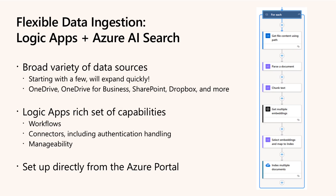Azure Search integrates natively with Microsoft Azure data sources like Blob Storage, OneLake, SQL Database, and Cosmos DB, making indexing straightforward. But often enterprise data resides outside Azure in services like OneDrive or SharePoint. Combining Azure Search with Logic Apps automates ingestion pipelines from external clouds, maintaining up-to-date indexes. A demo showed an automated ingestion flow from OneDrive for Business via Logic Apps, where folders were selected, embedding models specified, and incremental indexing managed automatically.